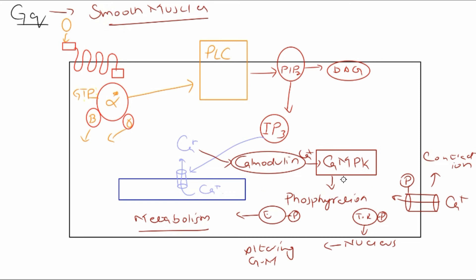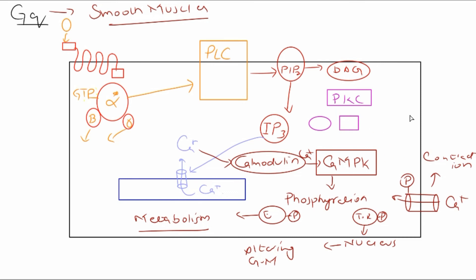The calcium-calmodulin protein kinase starts phosphorylation of different components — different enzymes, different transcriptional factors, different ion channels — and in return the smooth muscles undergo contraction. Now let's not forget diacylglycerol (DAG). DAG also has effects in the cell. Diacylglycerol activates another enzyme called protein kinase C.